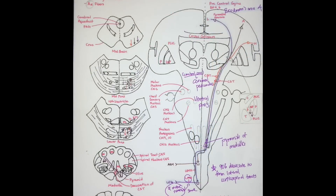Now we're looking at the corticospinal tract. We're starting with your upper motor neuron at your precentral gyrus, also known as Brodmann's area 4. In this case, we're starting at your leg. So you've got your upper motor neuron going down, going through your PLIC, then through your cerebral peduncles — sometimes called cerebral crura — through your ventral pons, and then meeting up at your pyramids of the medulla. 90% decussate to form the lateral corticospinal tracts, go down, and then synapse at your lower motor neuron in the ventral horn. Then you finally have your alpha motor neuron projecting to the muscle fibers of the motor units — in this case, of the leg.